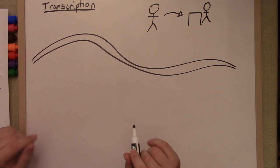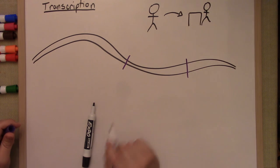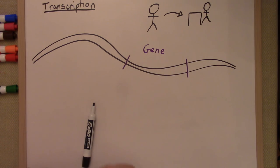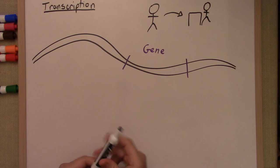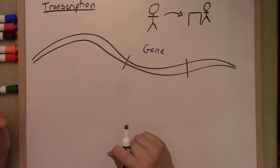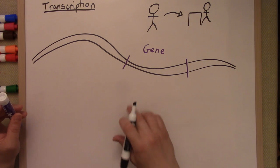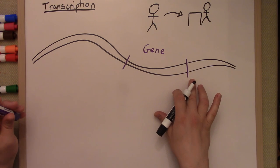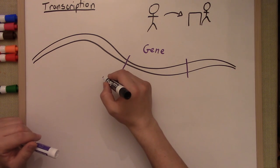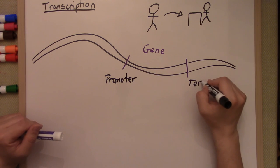We have a piece of double-stranded DNA, and there's a region of this double-stranded DNA that for some reason we're interested in. This is what we're going to call a gene. A gene is a piece of DNA that gets the information copied into RNA. These two locations that I've marked off in the gene are the start and stop of the gene, but they're called the promoter and the terminator.